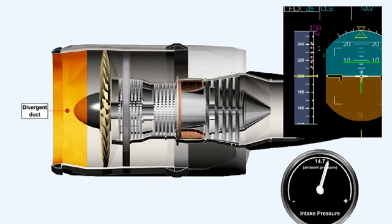The shape of a subsonic intake usually takes the form of a divergent duct. While the aircraft is moving at any appreciable speed, the divergence causes firstly a reduction of the airflow velocity between the lip of the intake and the inlet of the compressor, and secondly an increase of air pressure at the inlet of the compressor. However, while the engine is running on a stationary aircraft the pressure at the inlet of the compressor is below ambient pressure, because the engine compressor is increasing the velocity of the airflow through the intake.